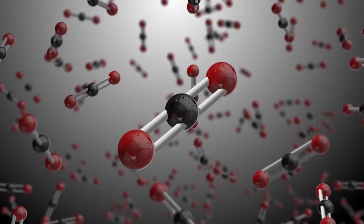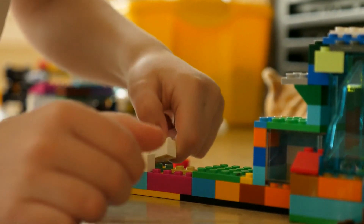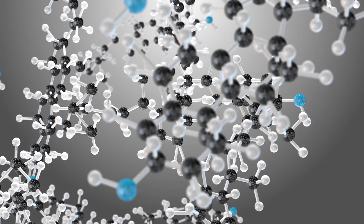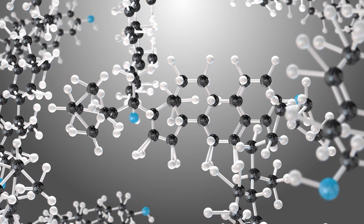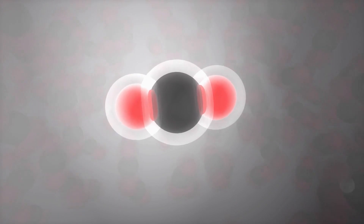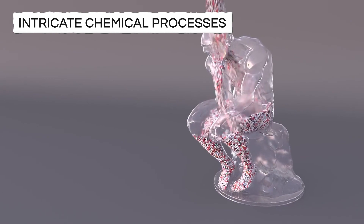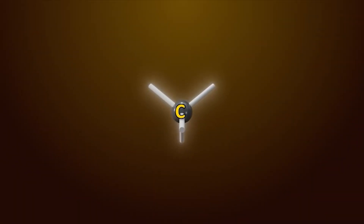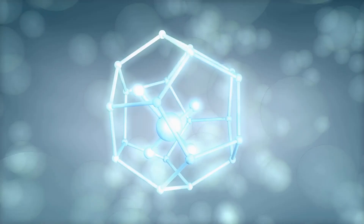This versatility renders carbon highly adaptable. Imagine if Lego bricks could connect on four sides instead of two — building things would become significantly easier. Similarly, carbon can form strong and stable bonds with up to four other atoms, including other carbon atoms. This remarkable feature enables carbon to construct complex molecules, a necessity for the intricate chemical processes vital for life. Carbon-based molecules can form diverse structures, including long, non-repetitive chains and closed rings.